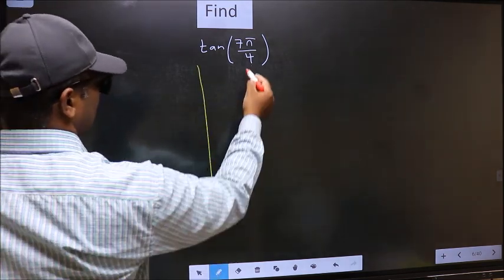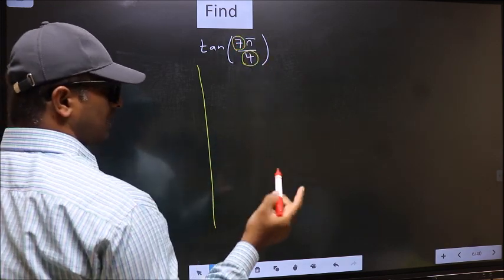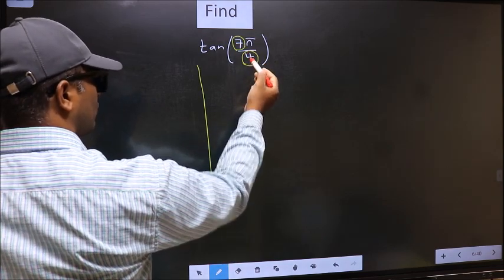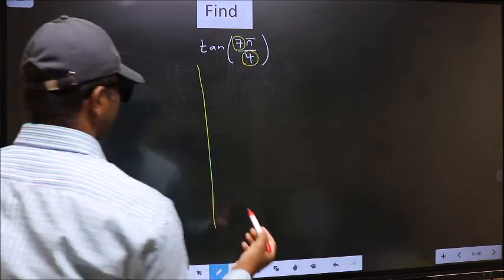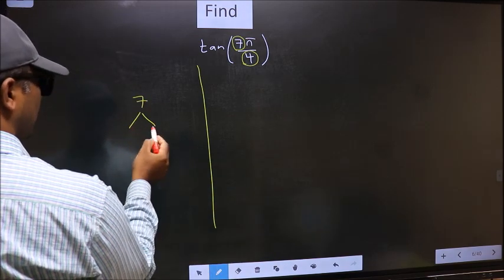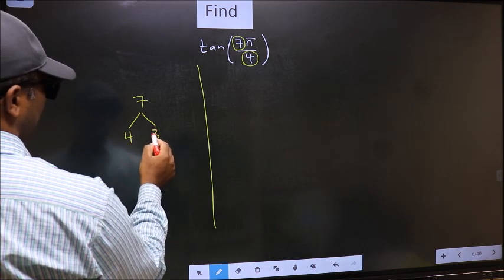In the denominator we have 4. In the numerator 7. Now you should check 7 is close to which multiple of 4. What I mean is 7. And here you should write multiples of 4. That is 4 and 8.